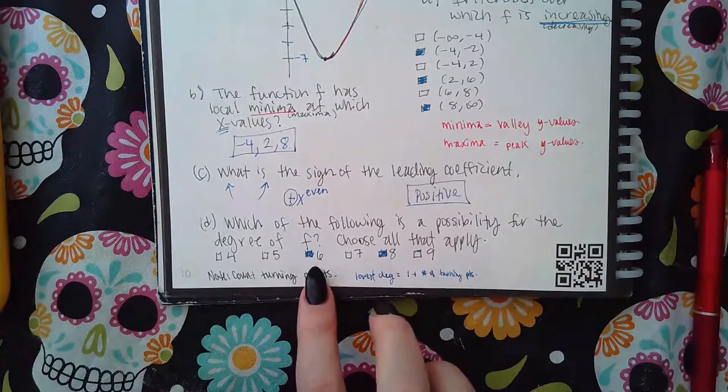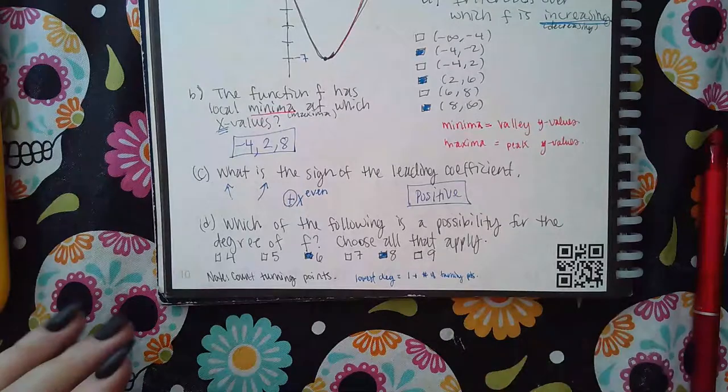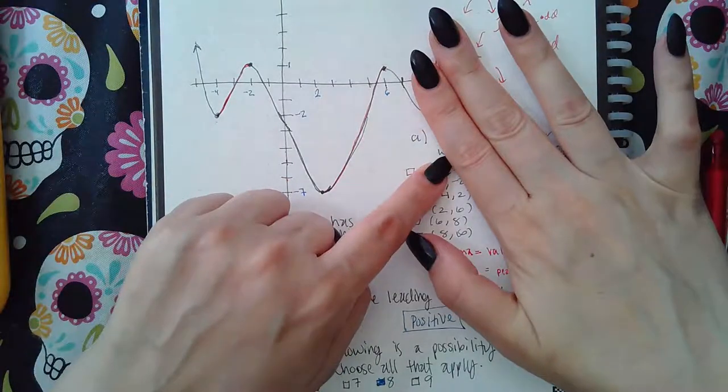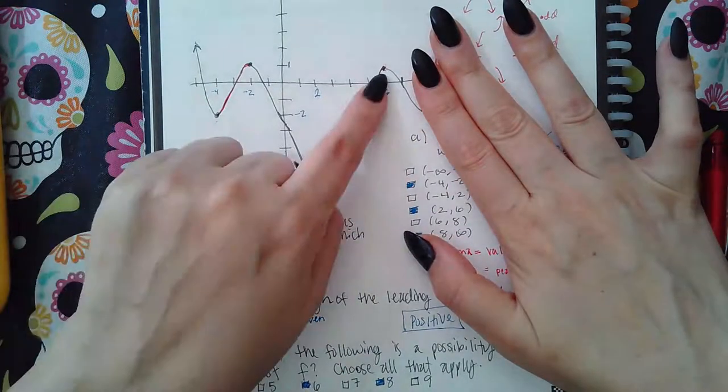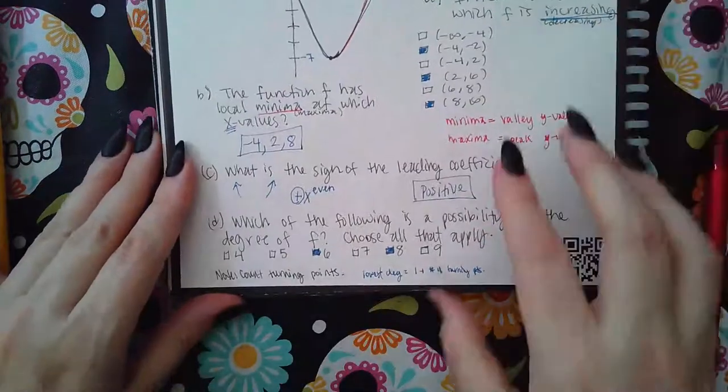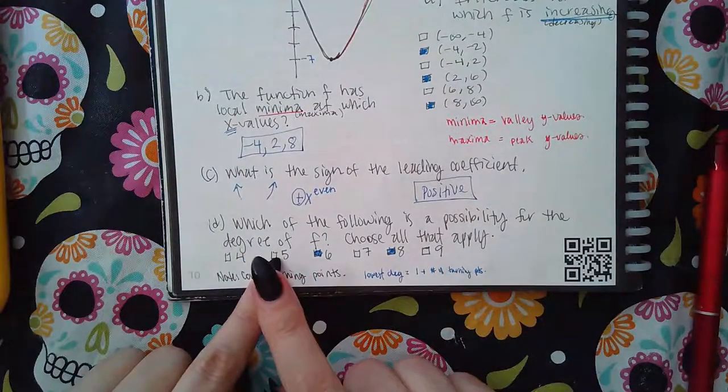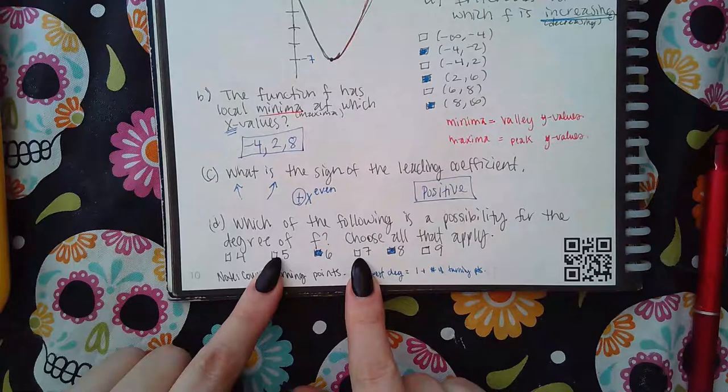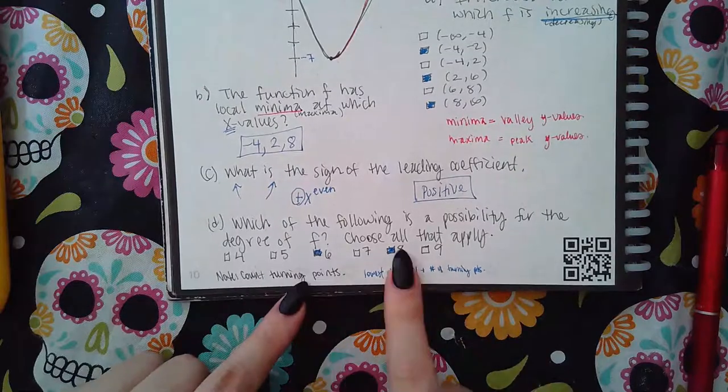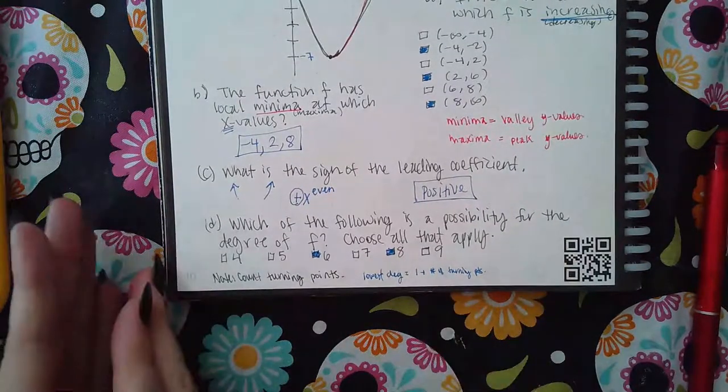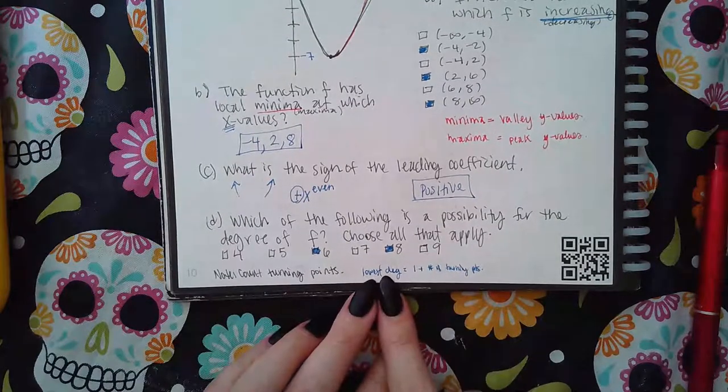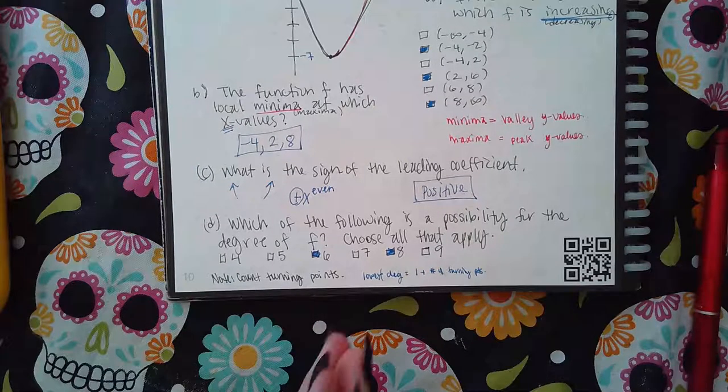Keep in mind, let's say the graph wasn't like this and was going downward forever. Then there would be one, two, three, four turning points if it were going downward forever. Then my degree, the lowest degree I could possibly have, would have been five. And then if I had one pair of imaginaries I could also select seven. If I had two pairs of imaginaries I could also select nine. So you keep adding two and keep selecting all of those numbers. Don't subtract two—you can't go backwards. It has to be the turning points plus one is the lowest possible thing you'll select, and then from there you keep adding two.